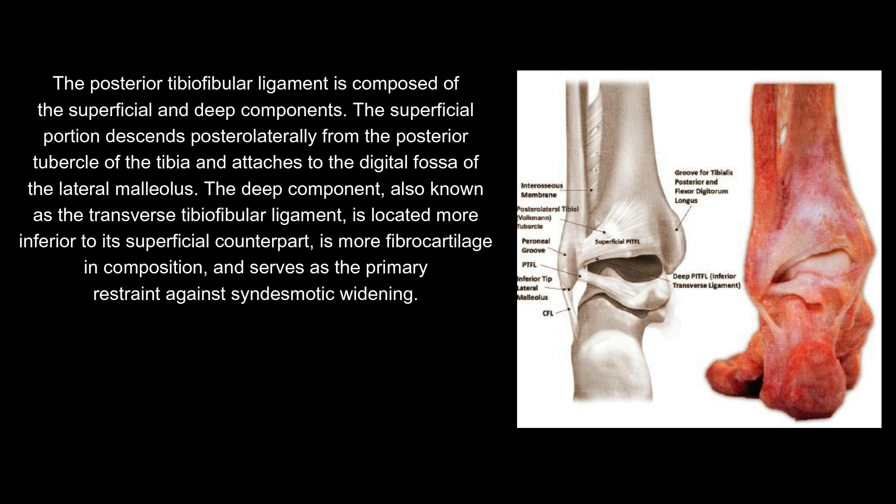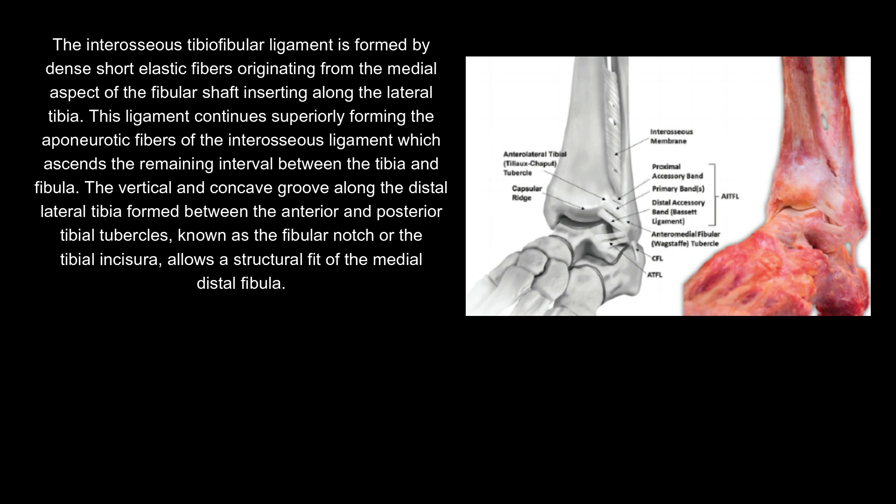The posterior tibiofibular ligament is composed of superficial and deep components. The superficial portion descends posterolaterally from the posterior tubercle of the tibia and attaches to the digital fossa of the lateral malleolus. The deep component, also known as the transverse tibiofibular ligament, is located more inferior to its superficial counterpart, is more fibrocartilage in composition, and serves as the primary restraint against syndesmotic widening. The interosseous tibiofibular ligament is formed by dense short elastic fibers originating from the medial aspect of the fibular shaft inserting along the lateral tibia, continuing superiorly forming the aponeurotic fibers of the interosseous ligament. The vertical and concave groove along the distal lateral tibia, known as the fibular notch or tibial incisura, allows a structural fit of the medial distal fibula.